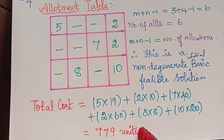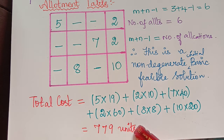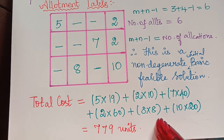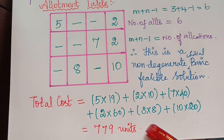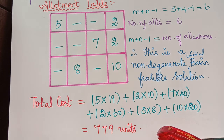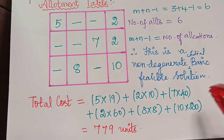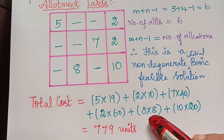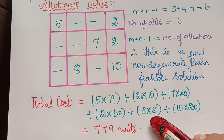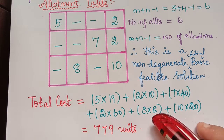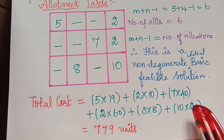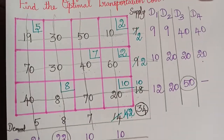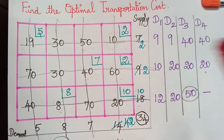This completes the initial basic feasible solution. To check whether this is the optimal solution, we must perform the optimality test using the Modified Distribution Method (MODI method). This will be continued in the next video — kindly check the playlist. Thank you.